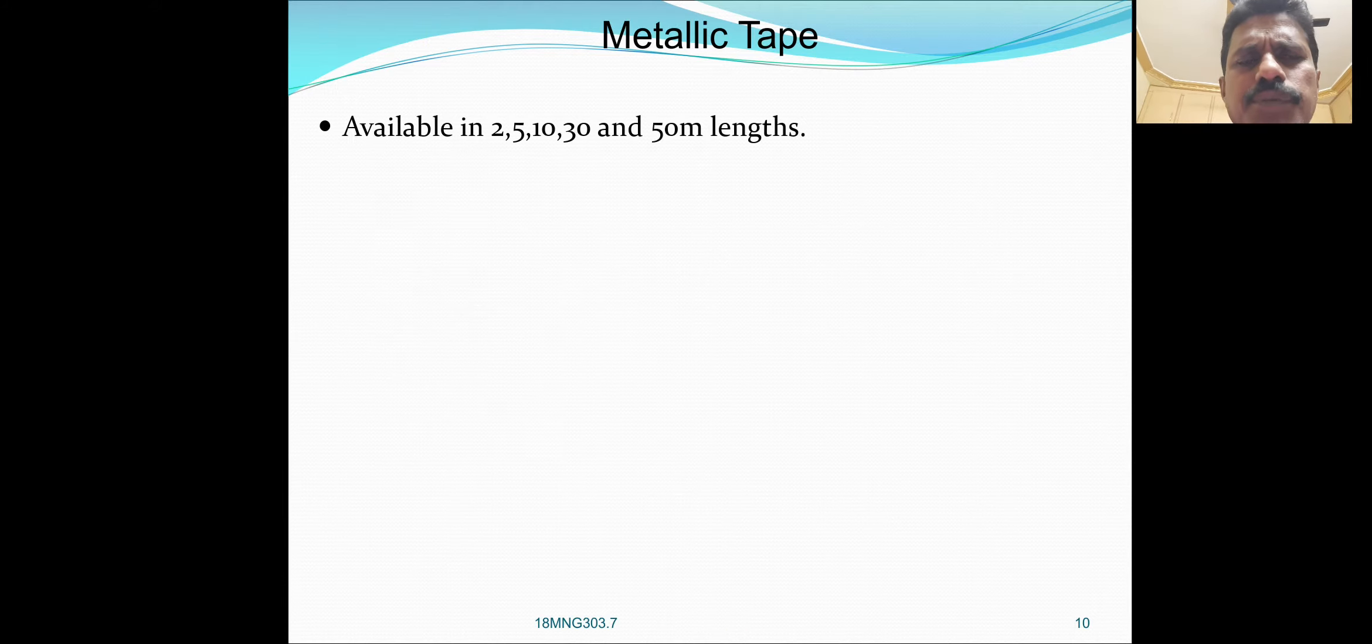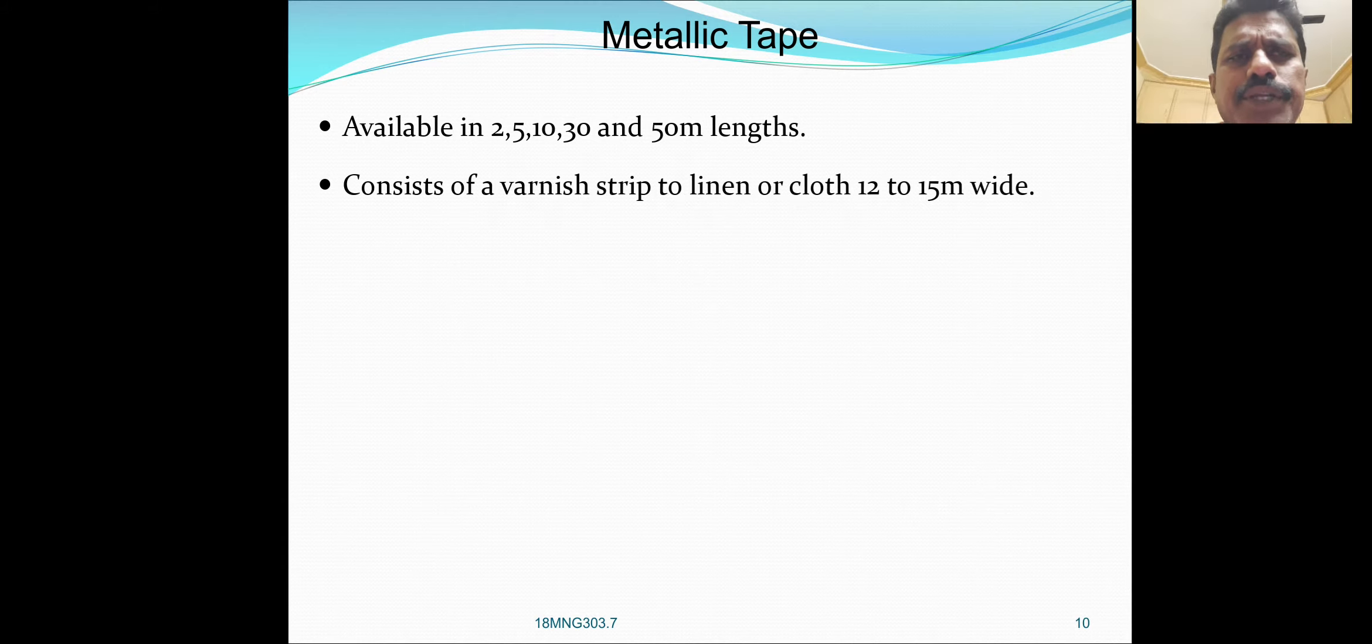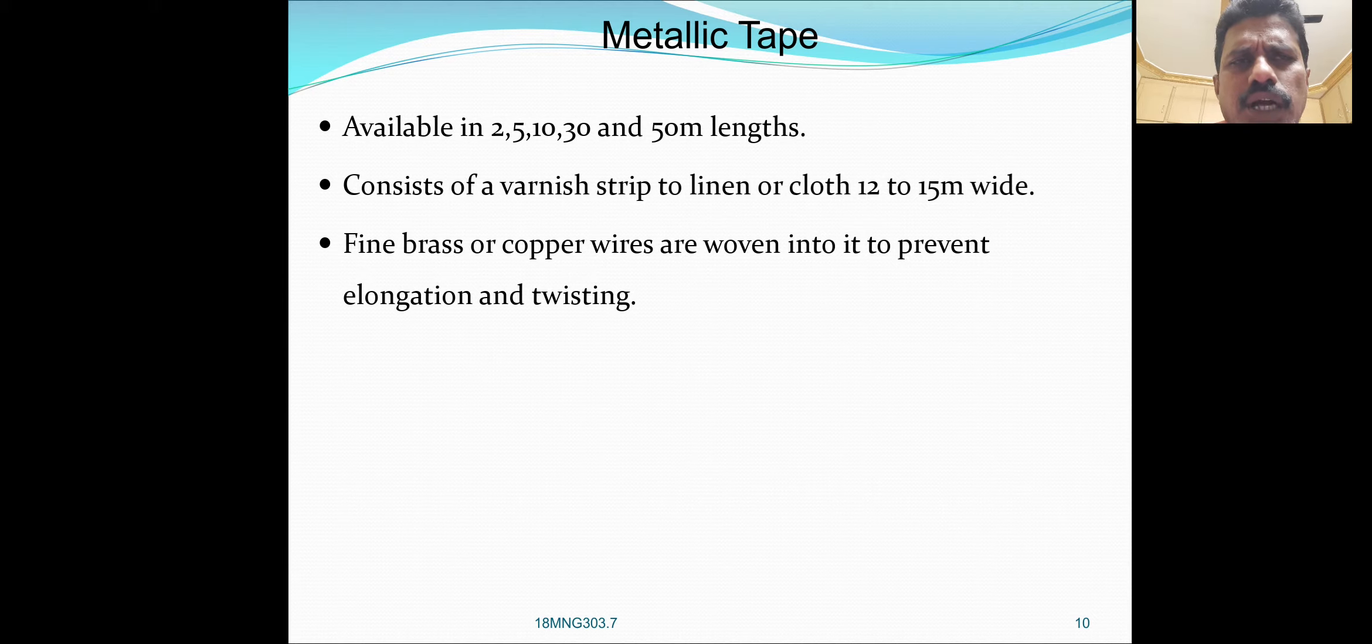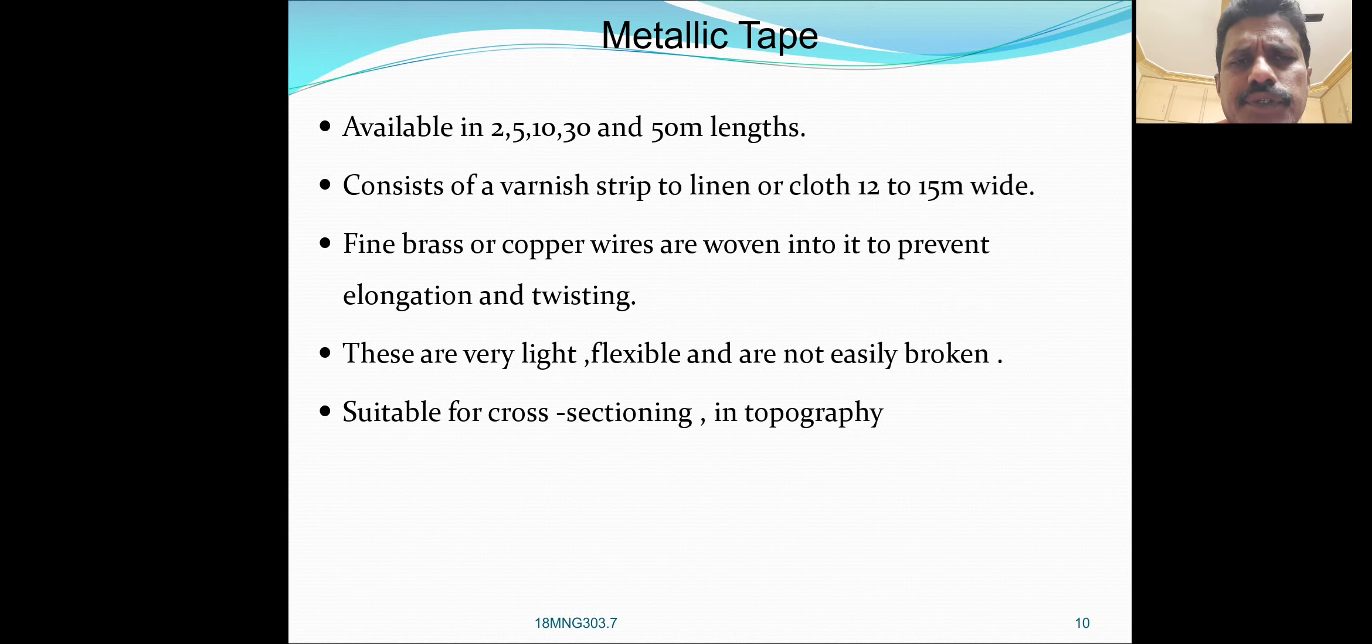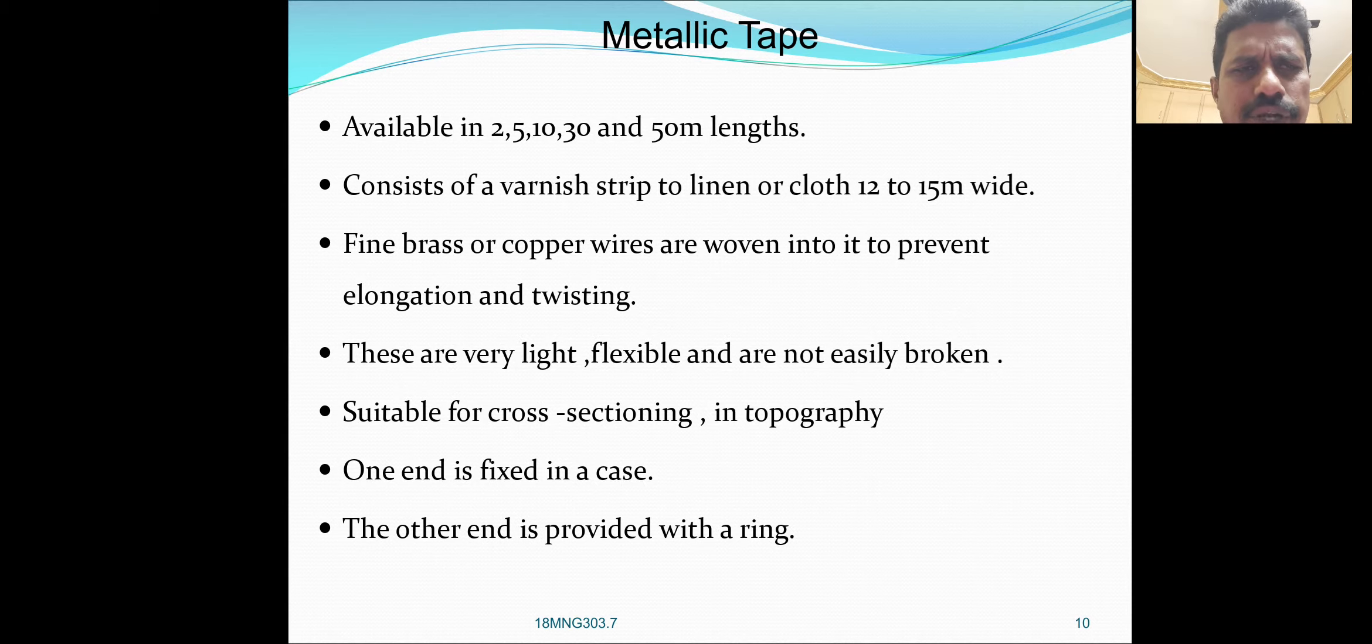Metallic tape is available in 2, 5, 10, 30 and 50 meters length. It consists of a varnish strip to linen or cloth, 12 to 15 millimeters wide. Fine brass or copper wires are woven into it to prevent elongation and twisting. These are very light, flexible and not easily broken. Suitable for cross-sectioning in topography. One end is fixed in a case, the other end is provided with a ring.